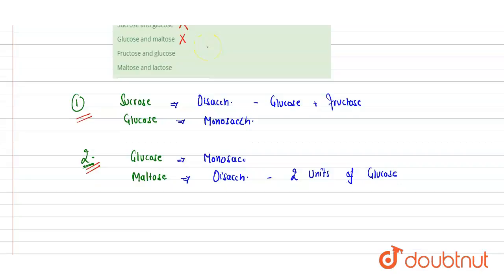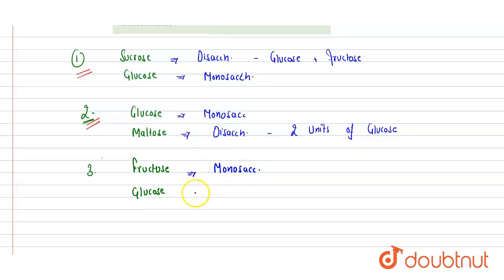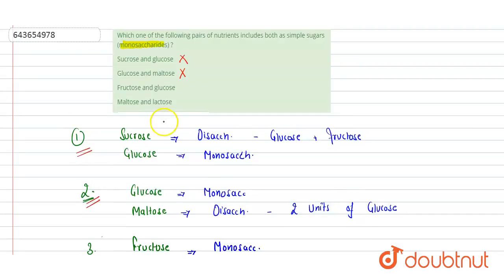Third pair: fructose and glucose. Fructose is a simple sugar which is a monosaccharide — it is not a disaccharide. Glucose, as we all know, is again a monosaccharide. So both sugars in this pair are monosaccharides, making this the correct option.